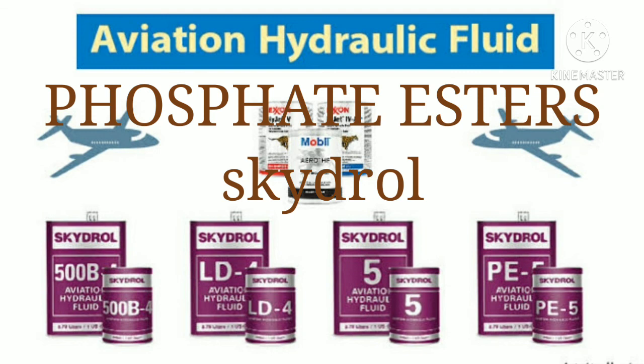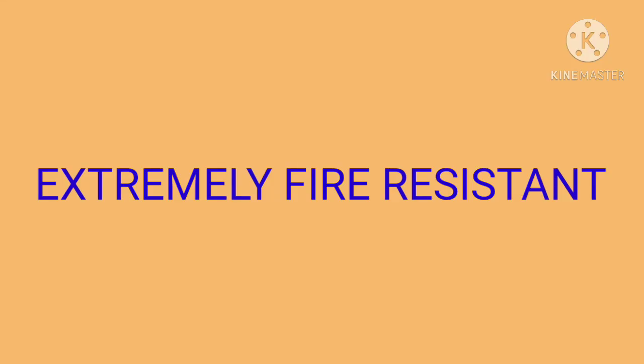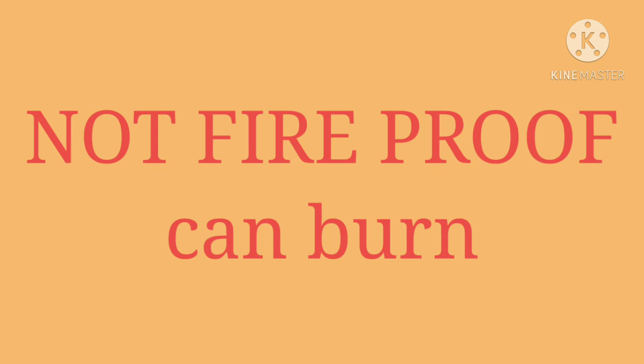Small aircraft typically use MIL-H-5606, but some aircraft use MIL-H-83282 if they can accommodate the high viscosity at low temperatures. Because of this disadvantage, MIL-H-83282 is not used in some hydraulic systems. The third type of hydraulic fluid is phosphate ester-based fluid, also known as Skydrol. These fluids are used in most commercial transport category aircraft and are extremely fire-resistant, though not fireproof — under certain conditions they can burn.